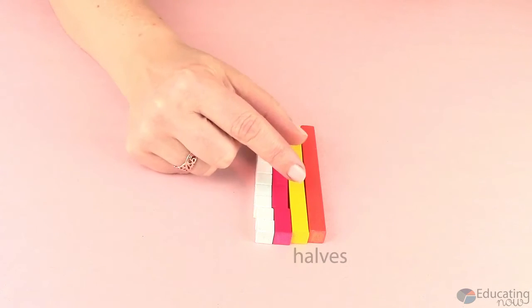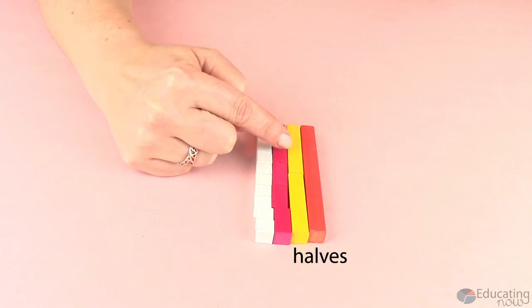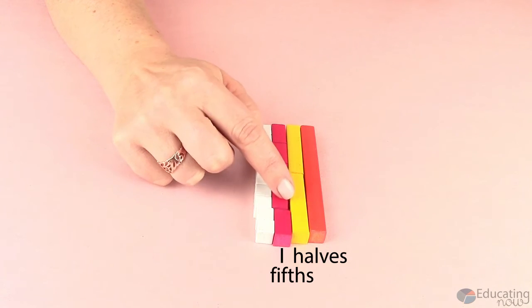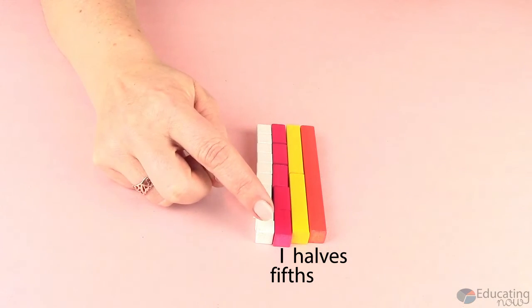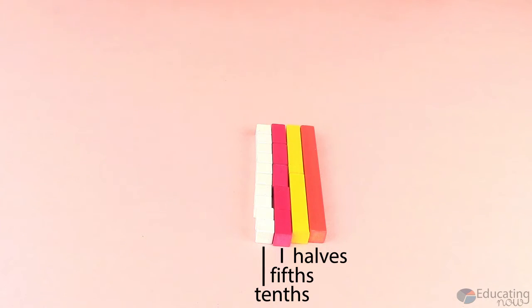The yellows would be called a half, there are two of them in the whole. The reds would be called fifths because there are five of them in the whole, and the whites we would call tenths because there are ten in the whole.